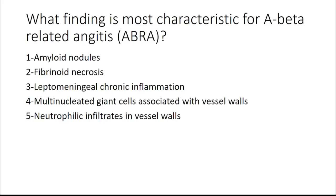Question 2: What is the finding most characteristic for Abeta-related angiitis? Options: amyloid nodules, fibrinoid necrosis, leptomeningeal chronic inflammation, multinucleated giant cells associated with vessel walls, or neutrophilic infiltrates in vessel walls. The answer is multinucleated giant cells associated with vessel walls. More specifically, they are associated with amyloid deposition in the vessels. That's the pathogenesis — these giant cells are essentially chewing up vessel walls that are full of Abeta amyloid.